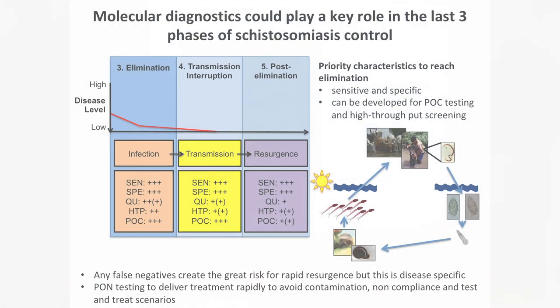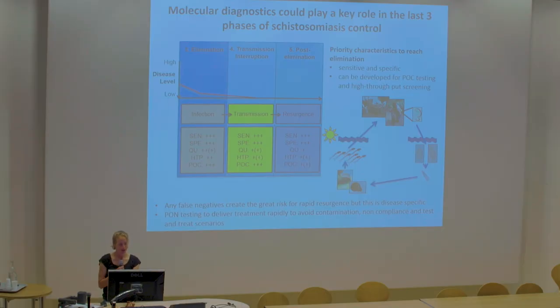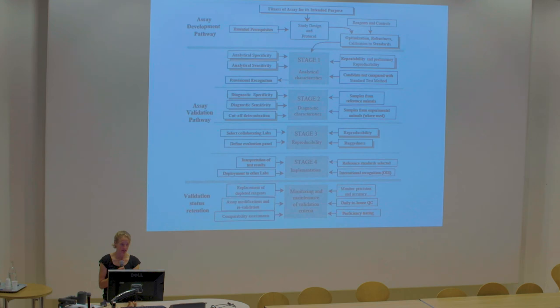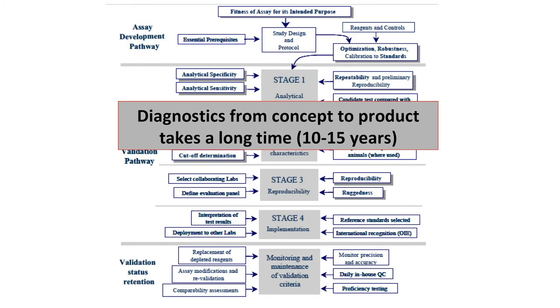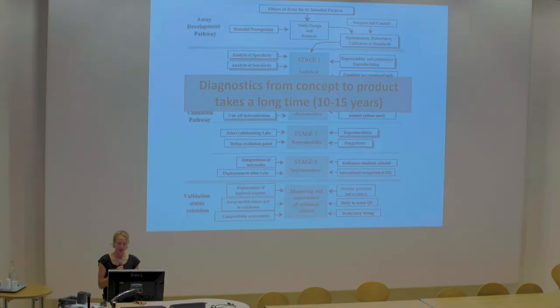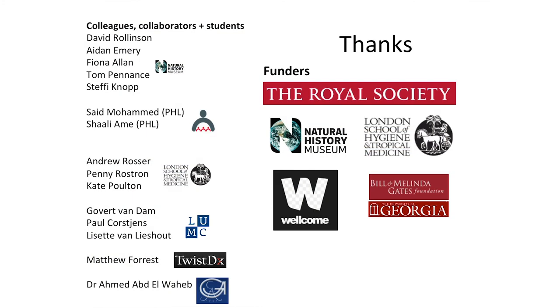Just to finish — any false negatives can really create a great risk of rapid reinsurgence, particularly of schistosomiasis, because that one person can infect the whole community again. This point-of-need testing will deliver treatment rapidly and overcome non-compliance with drug-taking by developing test-and-treat scenarios. And it's been brought up many times this morning how long it takes to go from an idea right through to a clinical or commercially available test — we need to start thinking now about what's needed to validate elimination going forward. Thank you to my collaborators, particularly my three students from the London School, and to the funders of those studies.